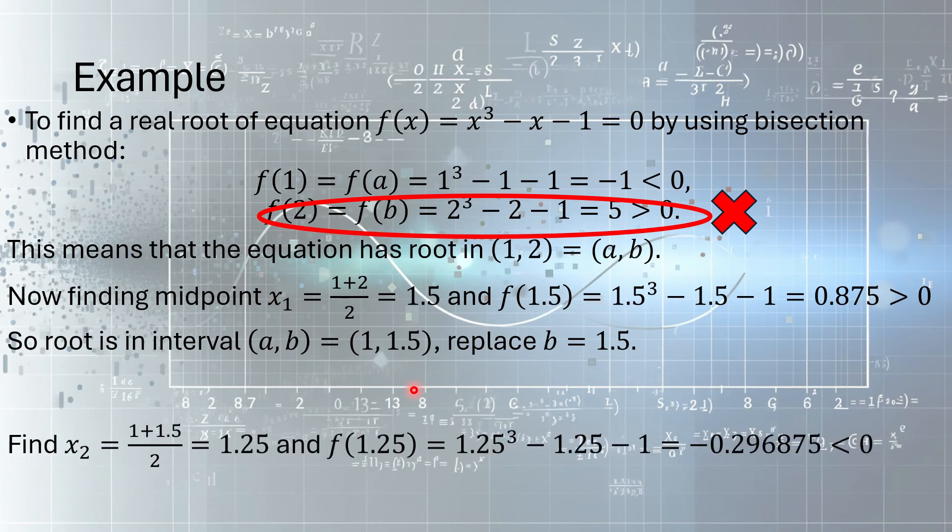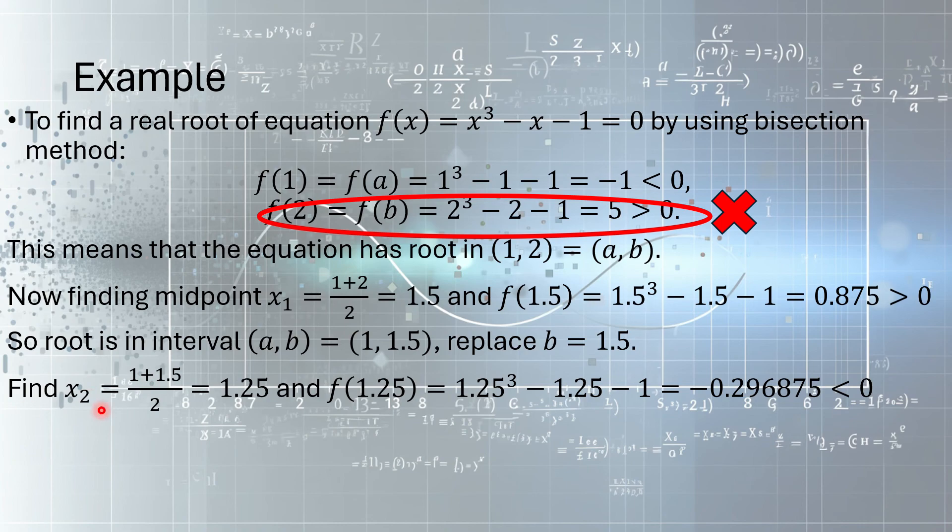And then you repeat it again, find the midpoint. So x₂ is now (1+1.5)/2, which is 1.25. And we find the value of f(1.25), that would give you -0.296875, which is negative.